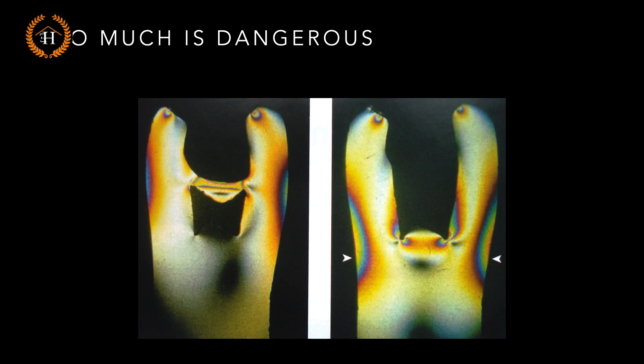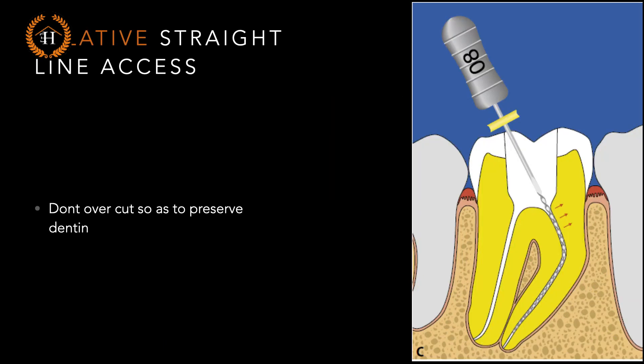Just near the cemento-enamel junction are the orifice openings. Therefore, if I do a lot of circumferential filing and remove a lot of dentine triangle there, I am practically weakening and reducing the thickness of dentine near the orifice level. Once that dentine has been removed, there is no way to replace it with any artificial material — whether fiber posts, composites, or core composite fillings.